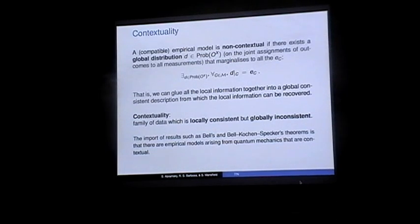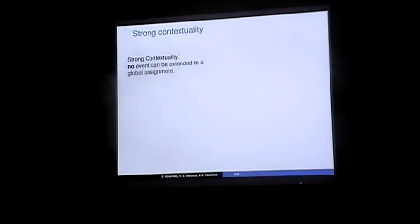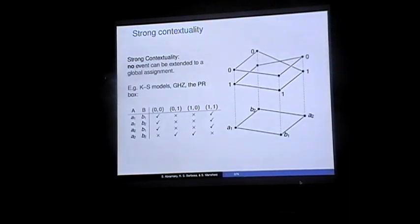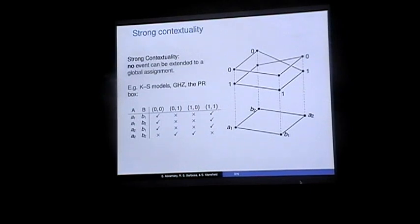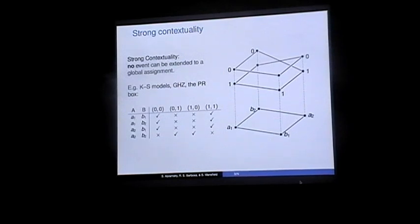The theorems of Bell and Kochen-Specker say there are actual quantum mechanical empirical models — things we can observe in real life — that do exhibit this contextual behavior. Strong contextuality is a very strong form of contextuality that works at the level of possibilities. You forget about the actual probabilities and just look at the possibilities. The idea is that there is not a single global assignment of outcomes to all measurements simultaneously that is consistent with the model.